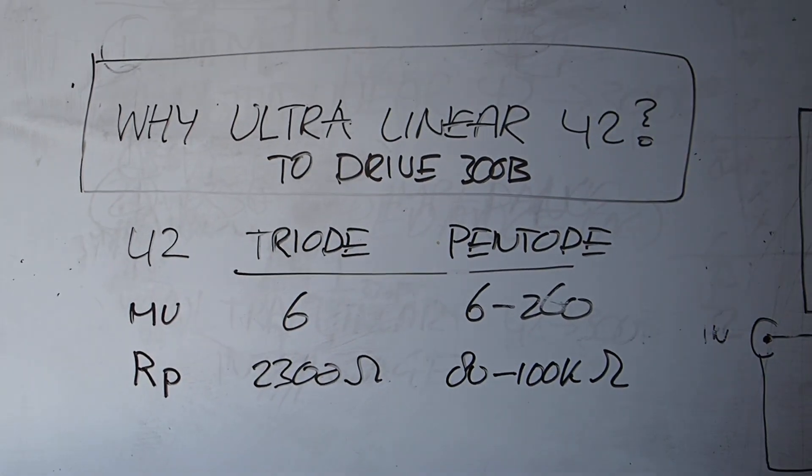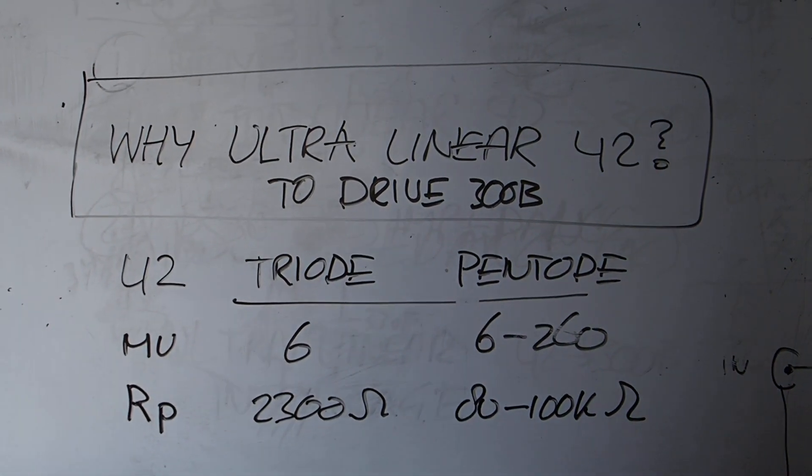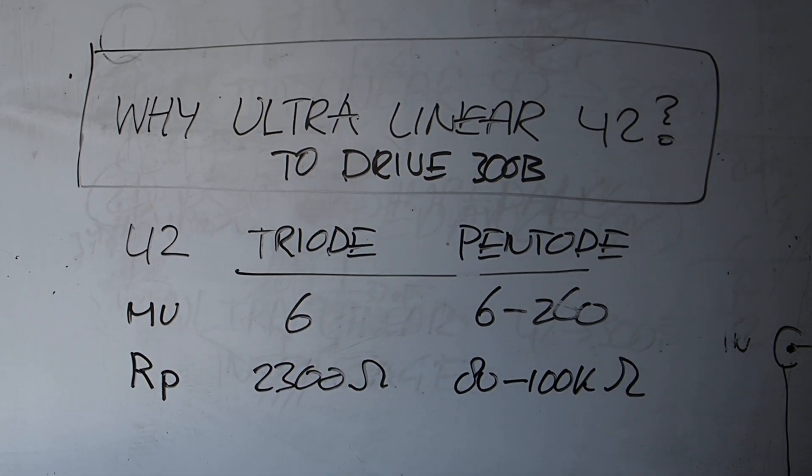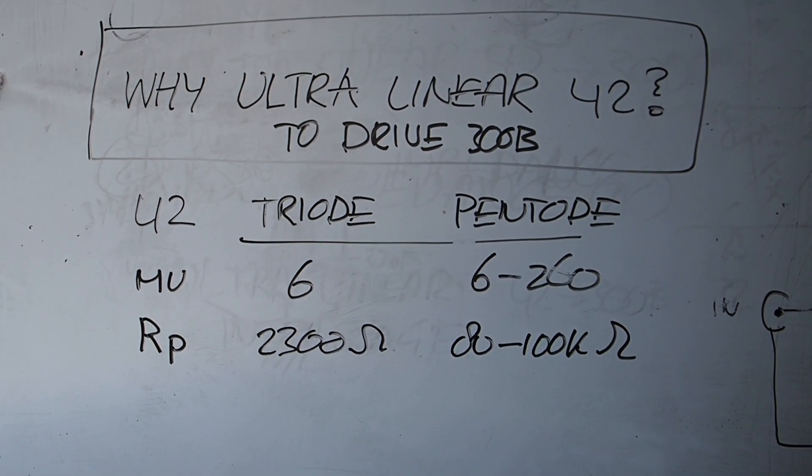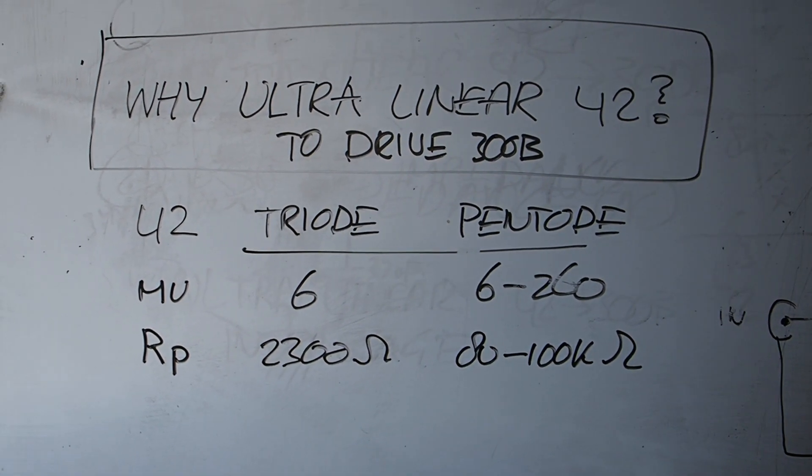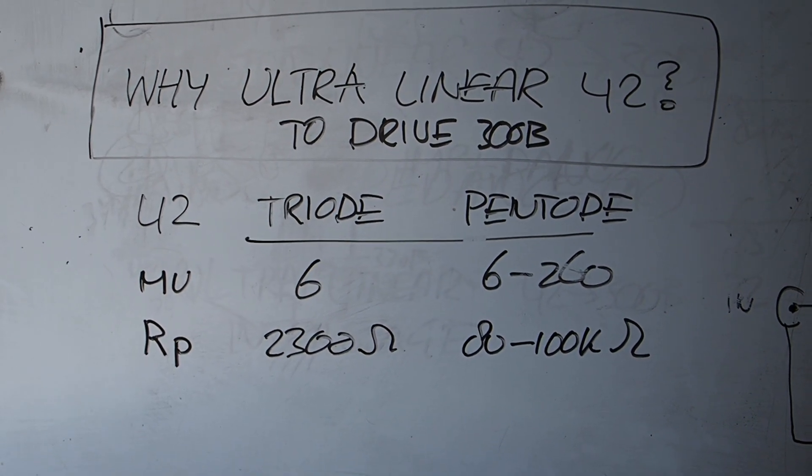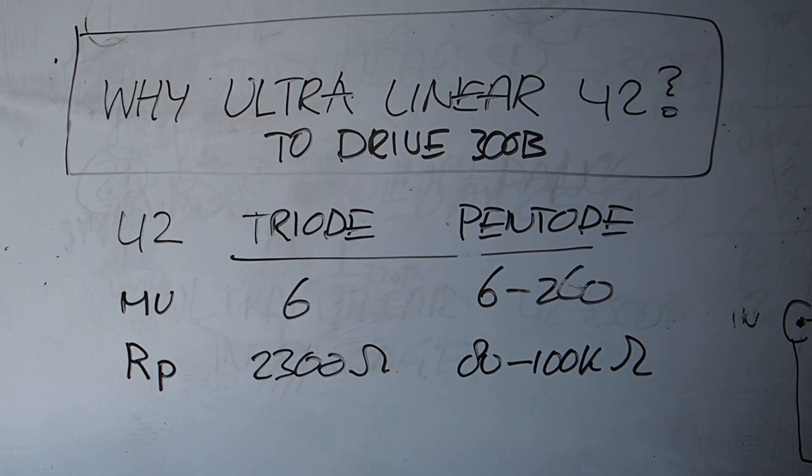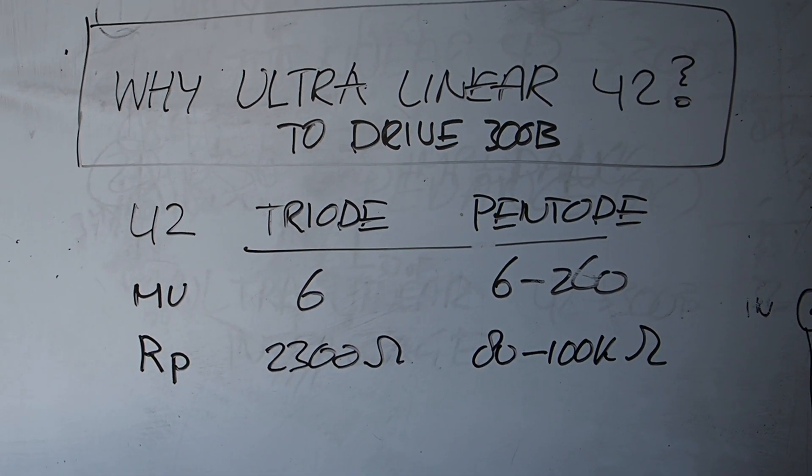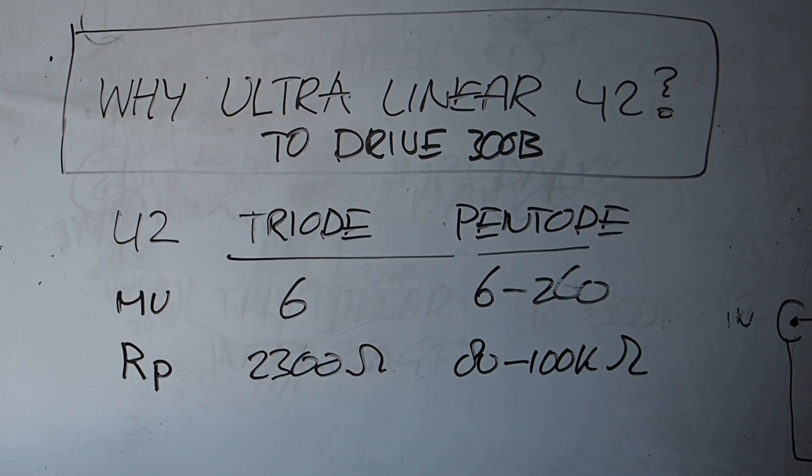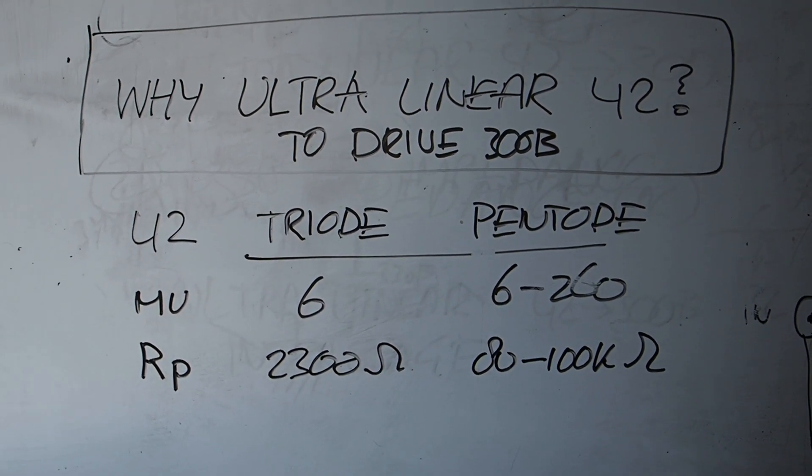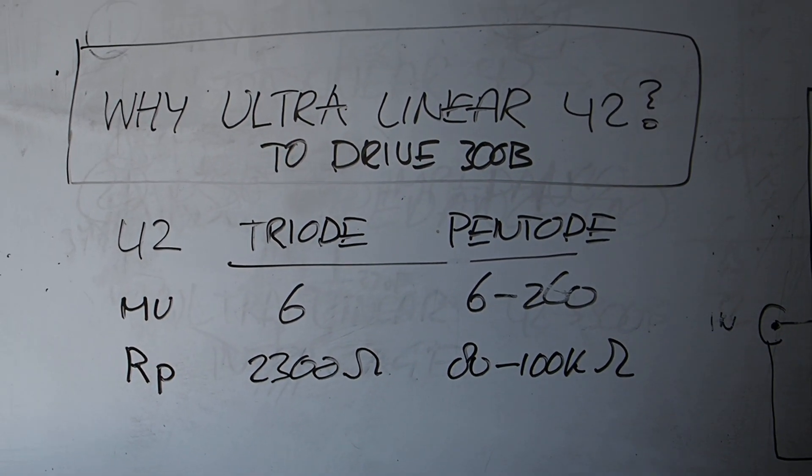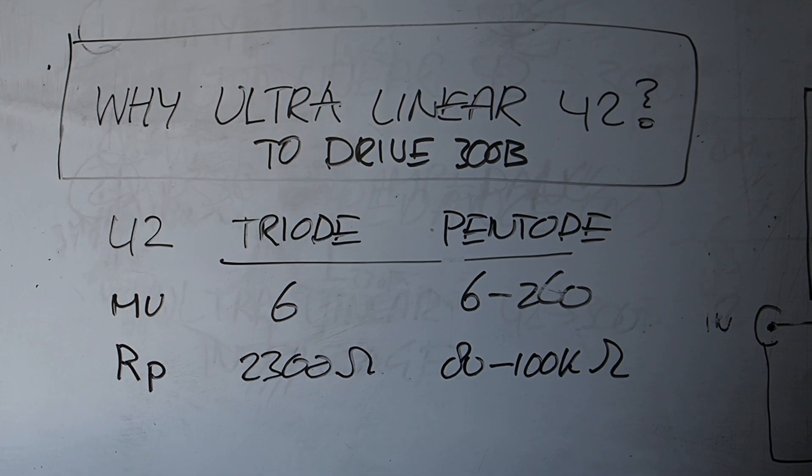I wanted to drive the 300B using a stronger tube but still stick to two stages. Previously I was driving the 300B with a Type 26, but that is quite a low amperage tube. I had tried 10 milliamps maximum, but I felt it couldn't actually drive the authority that I know an output tube Type 300B can have. So I was looking for a two-stage design that could deliver enough power.